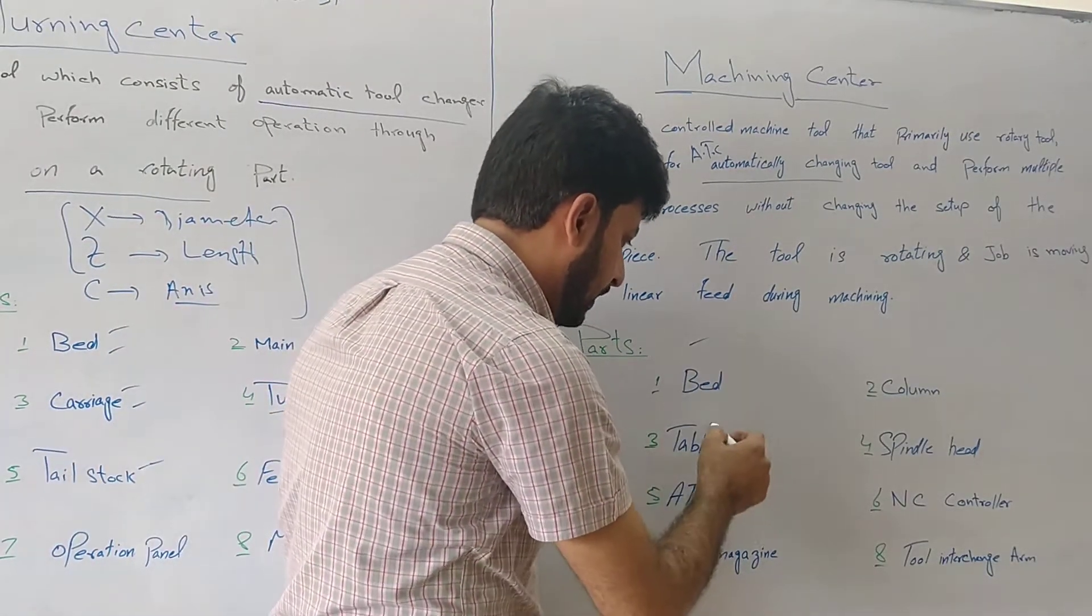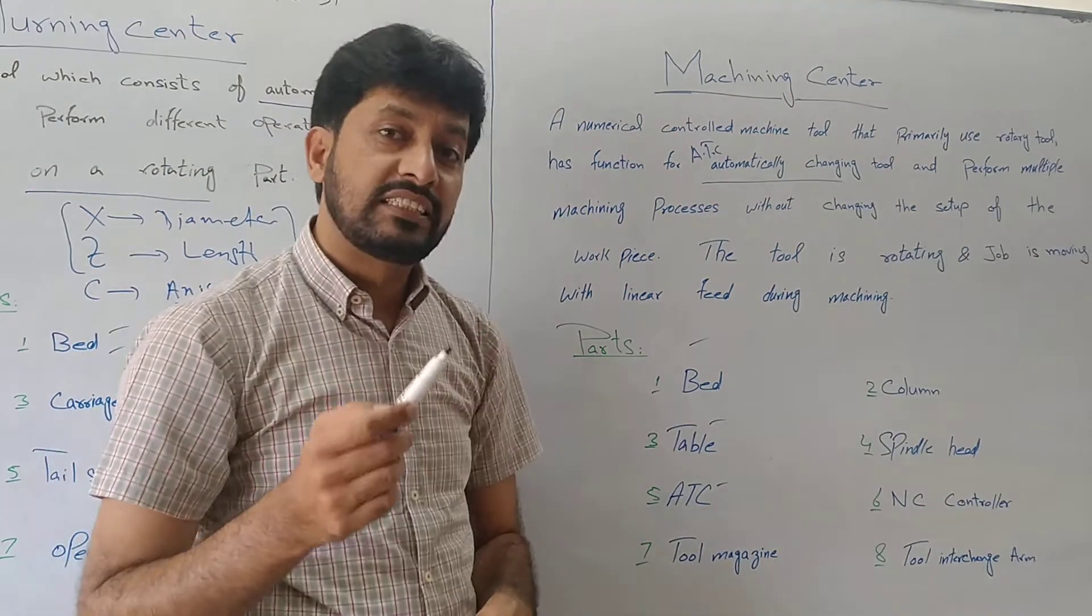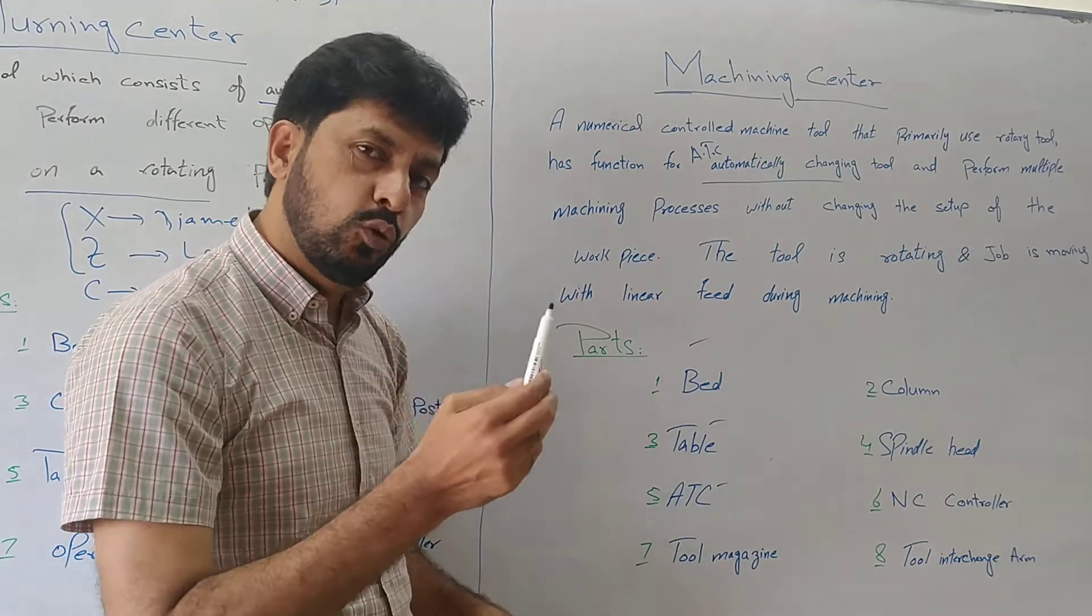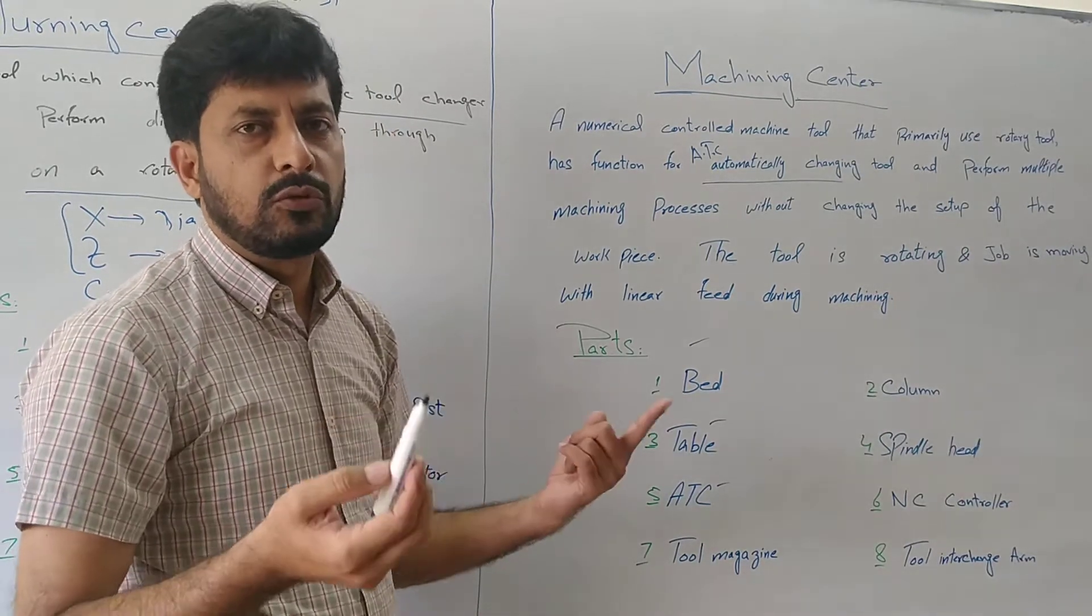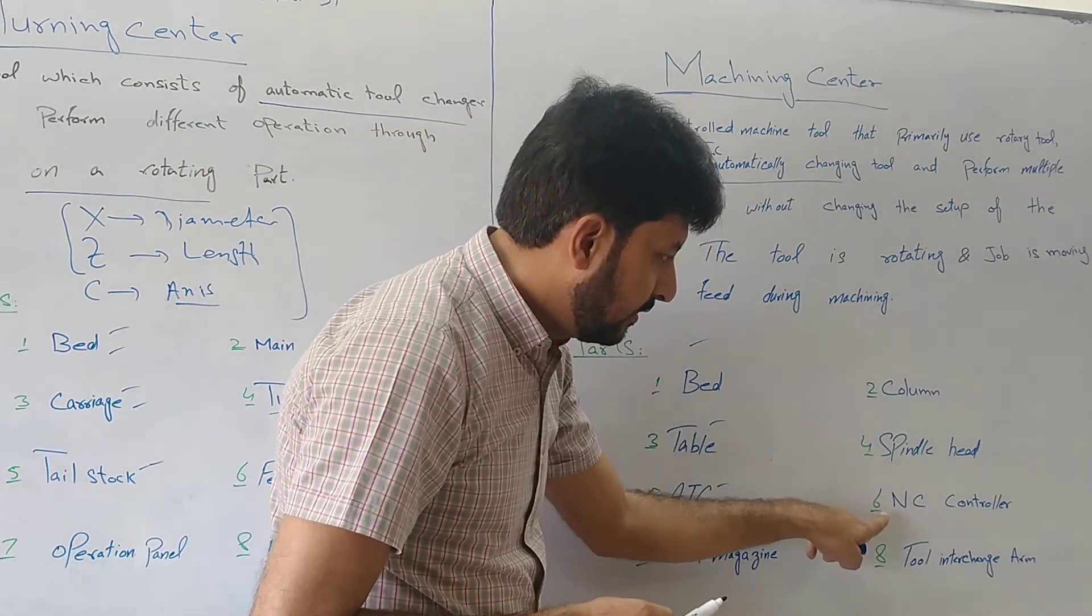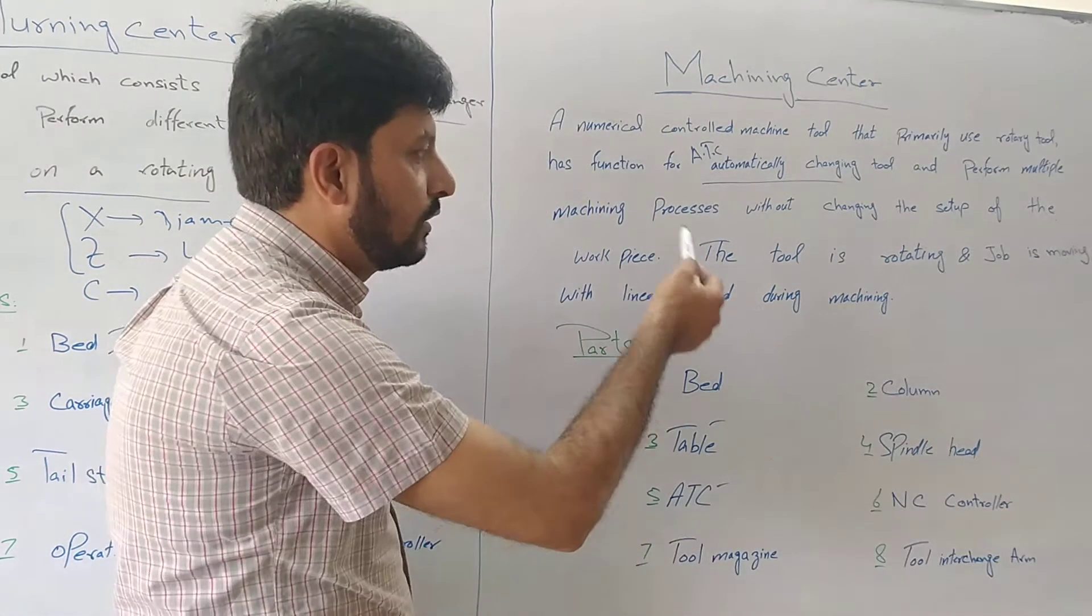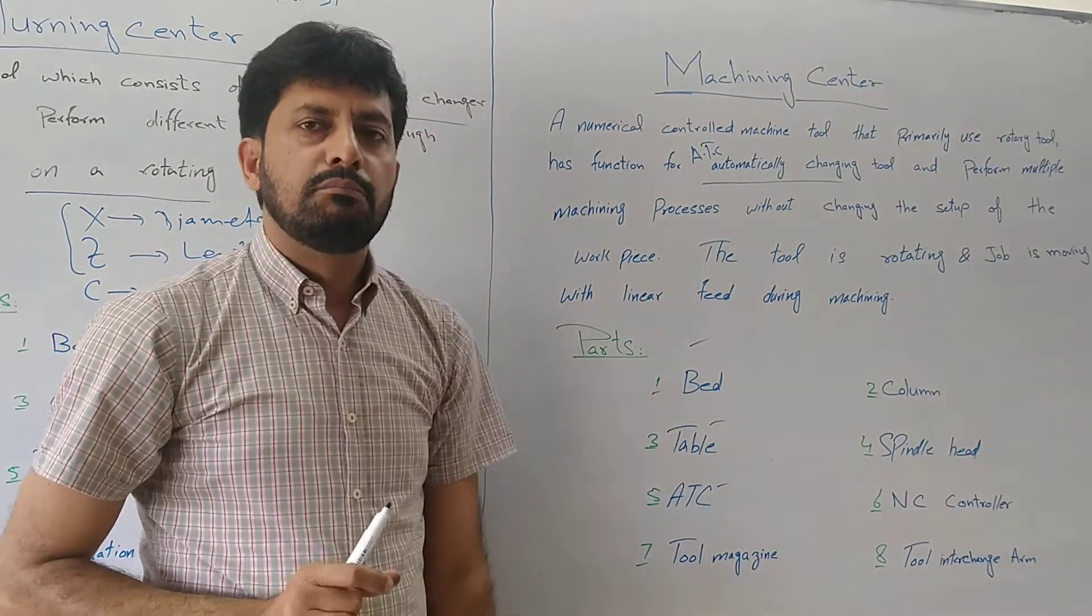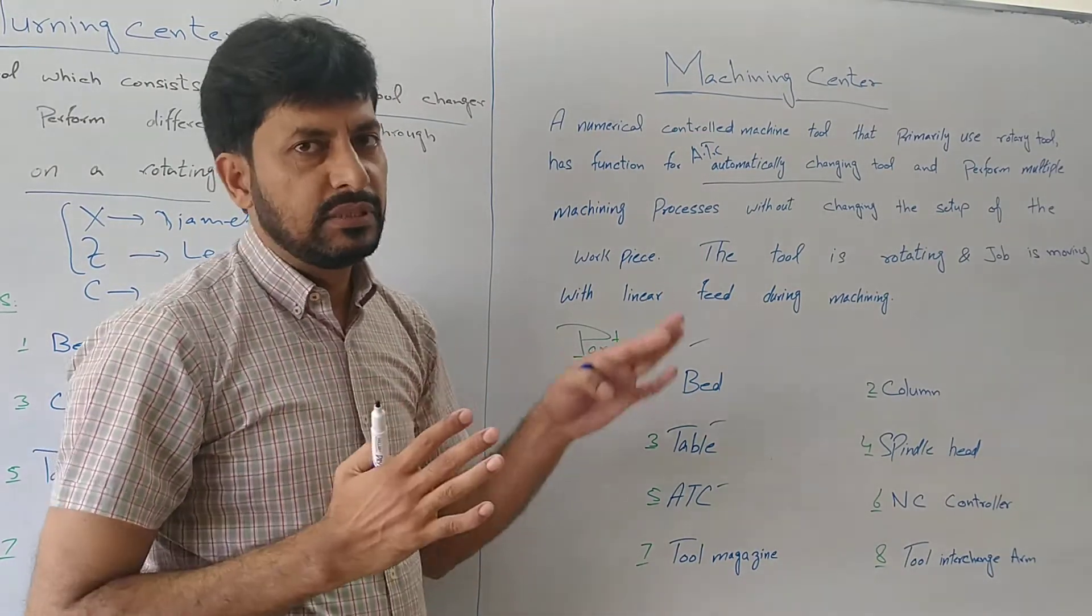So, one of the applications we have done, the process is a very simple machine. This is a column, spindle head, NC controller and tool interchange. This is the machining center.